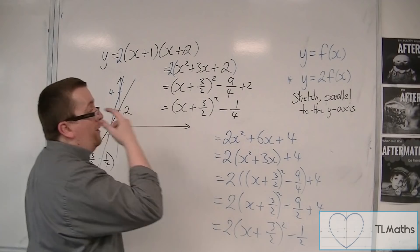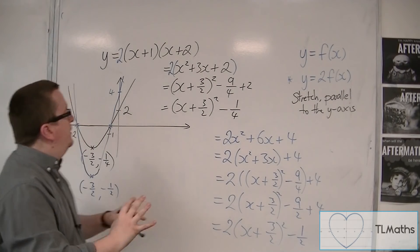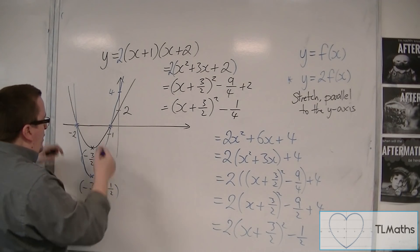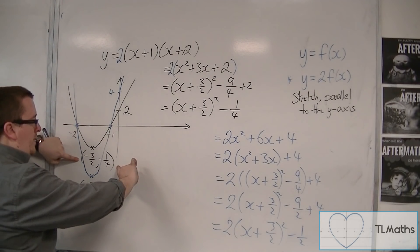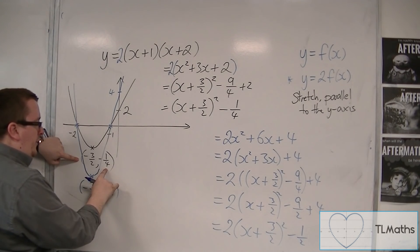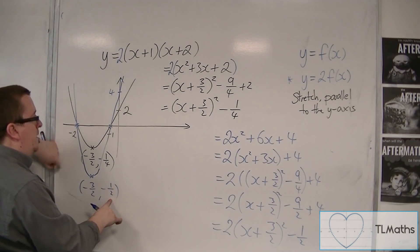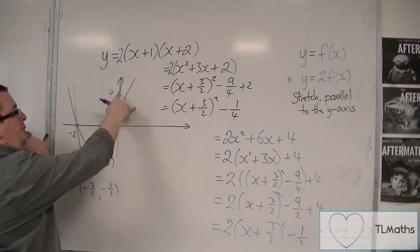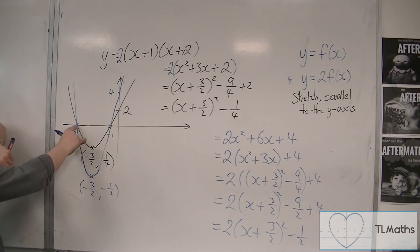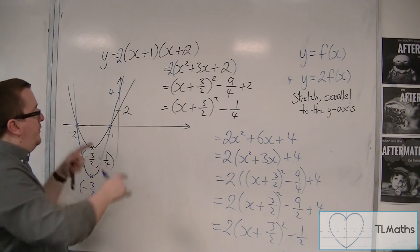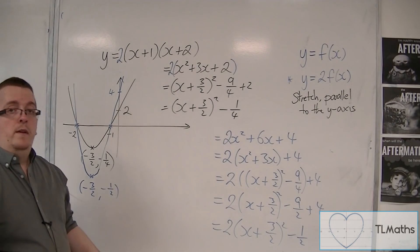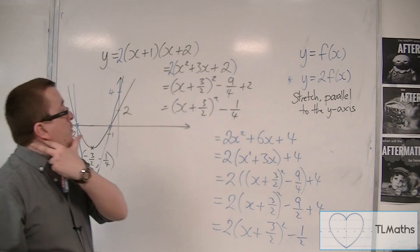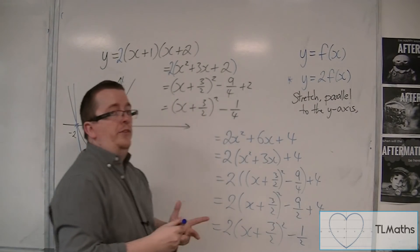So, a stretch parallel to the y-axis. And what has happened is that all of the y-coordinates... So if we look at the y-coordinates of the points: minus 3 halves, minus 1 quarter has doubled to minus 1 half. The y-coordinate (0, 2) doubles to (0, 4). And the y-coordinates of those two points are both 0, times those by 2, you still get 0. So all of the y-coordinates double.